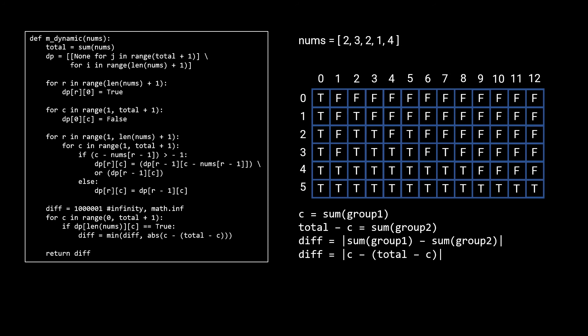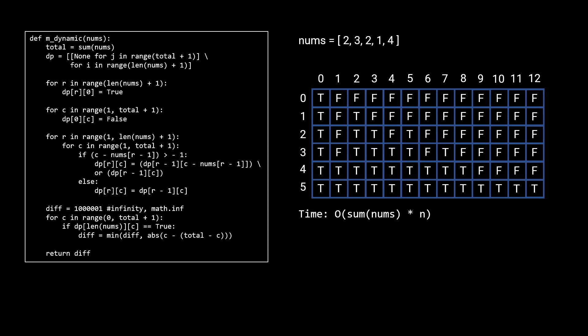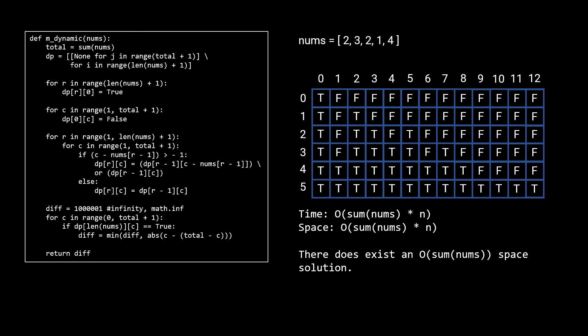Let's analyze the time and space complexity of the DP solution. For time, the most costly step is filling out the DP table, which takes O(sum_of_nums × n) — an improvement over the exponential recursive solution. Space complexity is also O(sum_of_nums × n) for the DP table. There's actually a way to shrink space complexity to O(sum_of_nums) by utilizing the fact that we only need the current row and the one directly above it at any given time. That might be a good exercise to try. Thank you for watching and I'll see you in the next video.